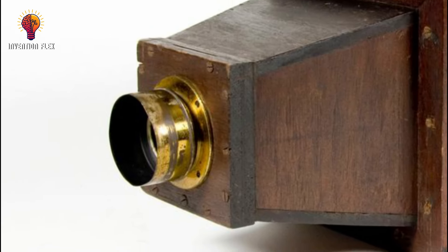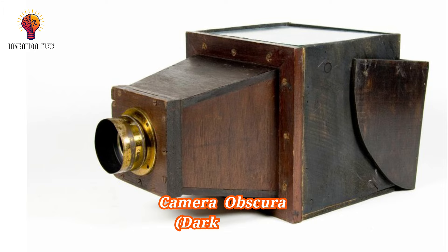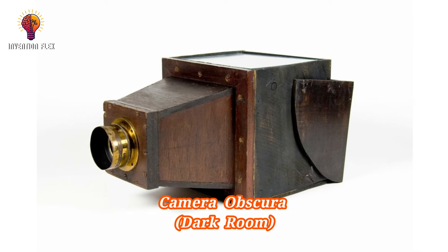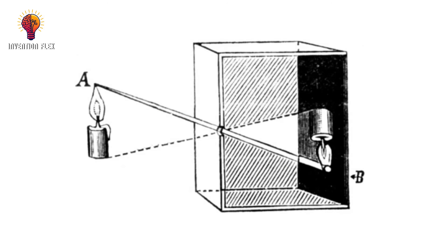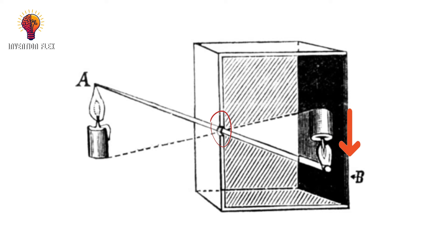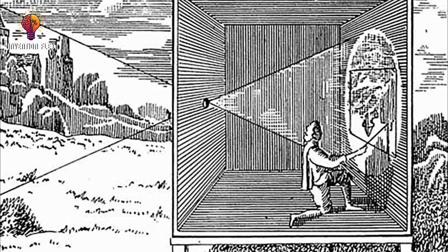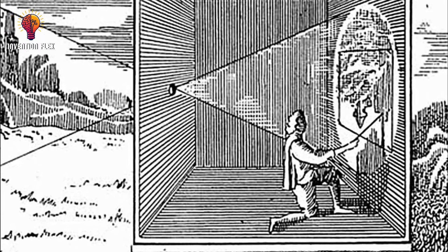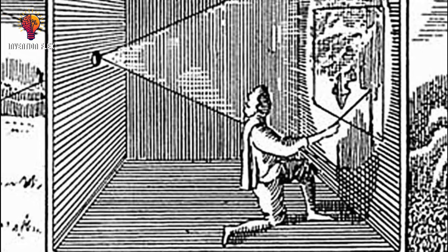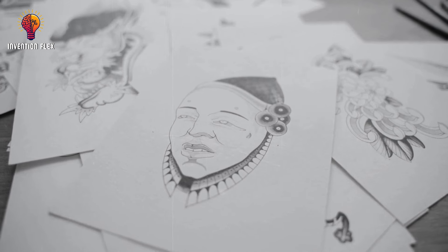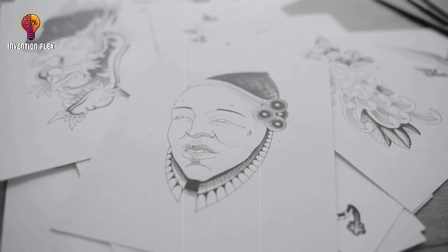The forerunner to the photographic camera was the camera obscura. Camera obscura, which is a Latin word for 'dark room,' is the natural optical phenomenon that occurs when an image of a scene on the other side of a screen or wall is projected through a small hole and forms an inverted image on a surface opposite to the opening. It was used around the middle of the 16th century for indirectly looking at eclipses, studying astronomical phenomena, as an aid in drawing and painting, and as entertainment.